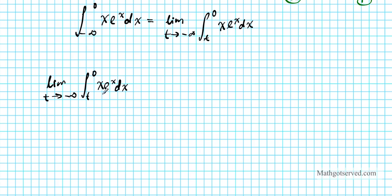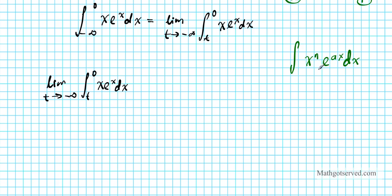This is clearly a candidate for integration by parts. I'm going to use tabular integration to do this because it's quicker. You can use tabular integration for any integral of the form x to the n times e to the ax — because if you keep repeatedly differentiating x to the n you're going to end up at 0, and when you keep integrating e to the ax you keep getting the same value multiplied by a. So if you have an integral of this nature, tabular integration is quicker, as I'll illustrate.